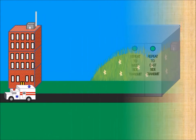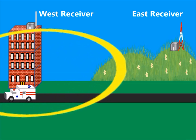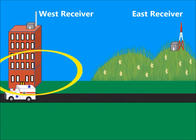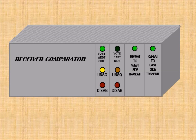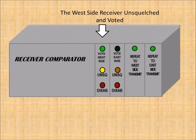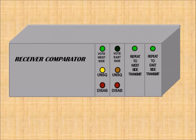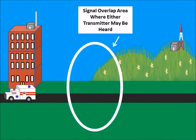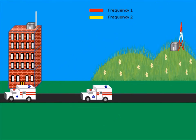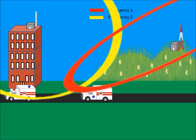The comparator is not a radio but an audio routing device — it doesn't care what channel the audio signal comes in on, only audio quality. In this case, a field unit transmitting in the west service area is received only by the west receiver. However, the comparator is configured to allow both the west and east transmitters to retransmit the voted audio. The comparator votes on the incoming signal and retransmits it over both transmitters for the benefit of all users, regardless of channel.